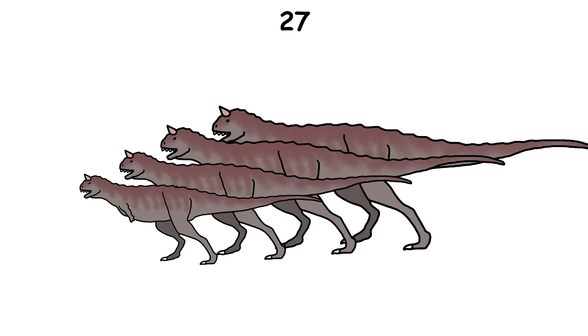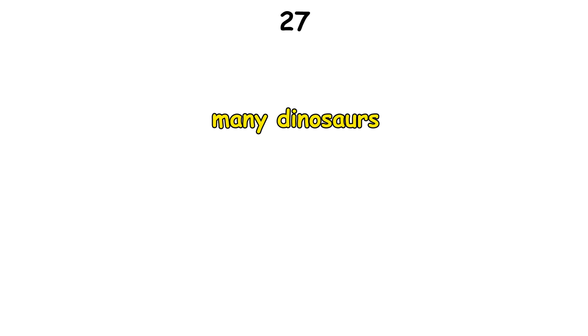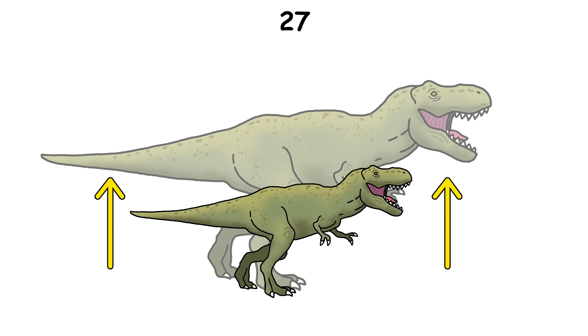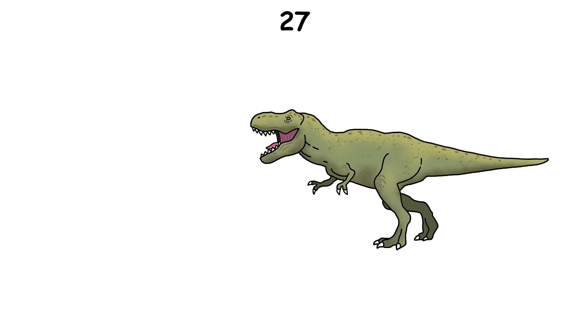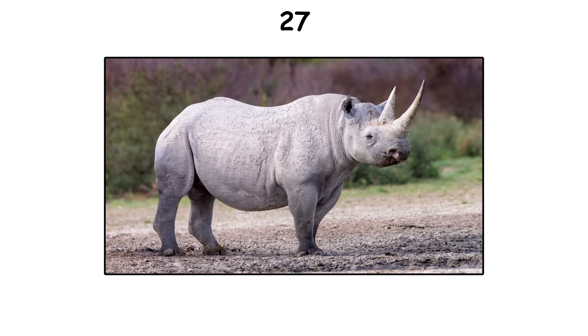Dinosaurs didn't grow slowly and steadily their whole lives. By examining their bones, scientists found that many dinosaurs, including the T. rex, had incredible teenage growth spurts. A T. rex could gain up to 5 pounds a day during this period, going from the size of a chicken to a rhino in just a few years.